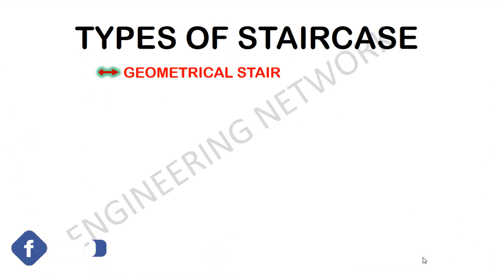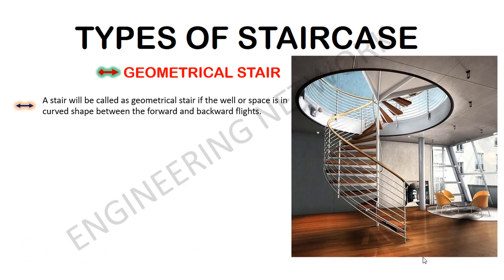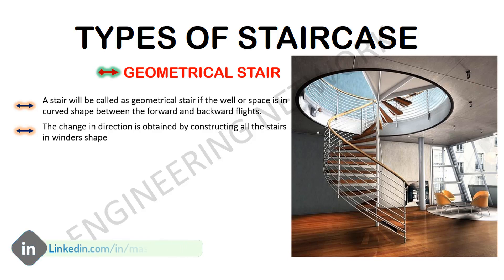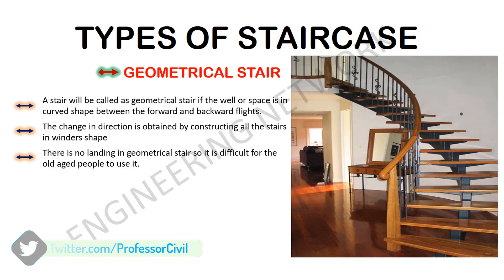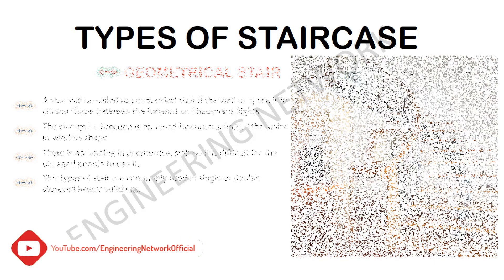Next is the geometrical stair. A stair is called a geometrical stair if the well space is in a curved shape between the forward and backward flights. In a geometrical stair, the change in direction is obtained by constructing all the stairs in winder shape. Because there is no landing in a geometrical stair, it is difficult for elderly people to use. This type of stair is commonly used in single or double storey buildings.